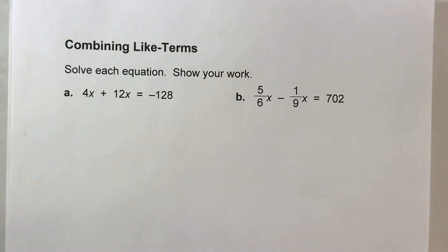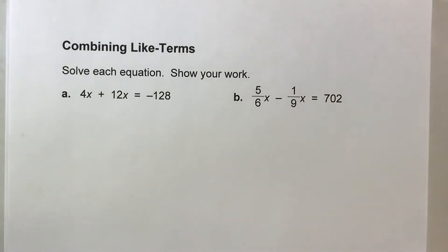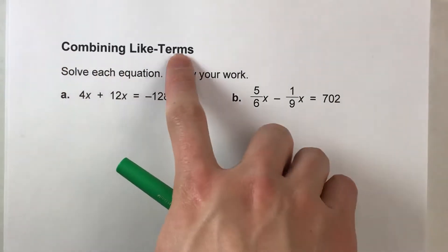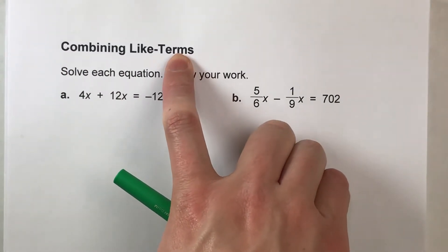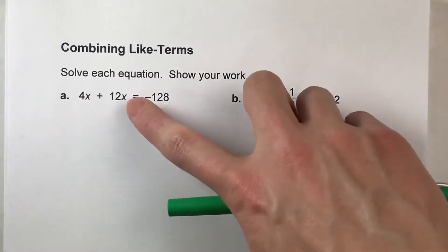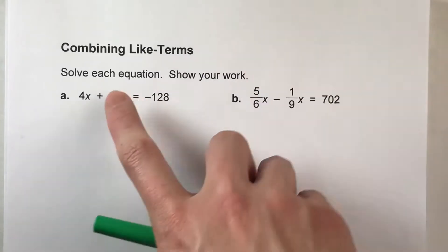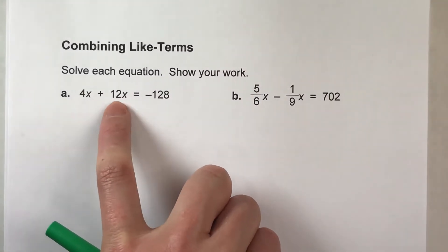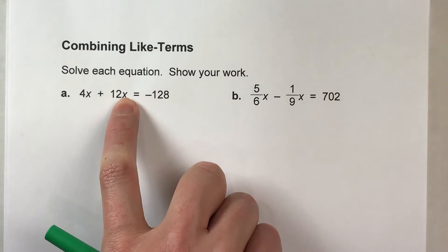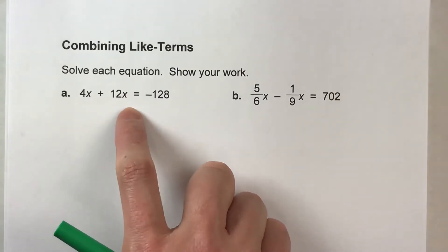So today we are solving algebra equations and they all involve combining like terms. And what that means is when you have on the same side of the equal sign two or more terms with the exact same variable ending, we can combine them together.